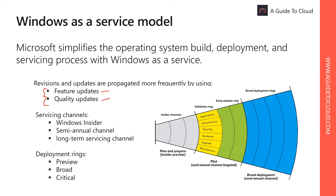Quality Updates are security updates and fixes, usually issued once a month on the second Tuesday of each month, which is called Patch Tuesday. You can control how and when these updates are applied with servicing channels and deployment rings. The servicing channels include Windows Insider and the semi-annual channel, while deployment rings include preview, broad, and critical.